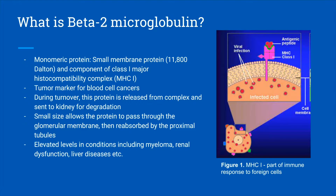What is beta-2-microglobulin? It is a monomeric protein which is a component of the class 1 major histocompatibility complex. The turnover of this protein results in its release from the complex and it is sent to the kidney for degradation. The small size of the protein allows it to pass through the glomerular membrane and be reabsorbed by proximal tubules in nephrons in the kidneys.